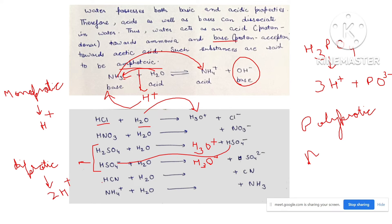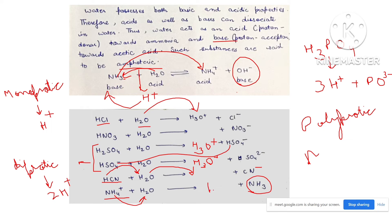Similarly, HCN dissociates as H positive and CN negative. The H positive is taken up by the water molecule and converted into H3O positive, leaving CN negative. Ammonium ion releases an H plus ion and itself converts into ammonia, forming H3O positive. H3O positive is also known as the hydronium ion.